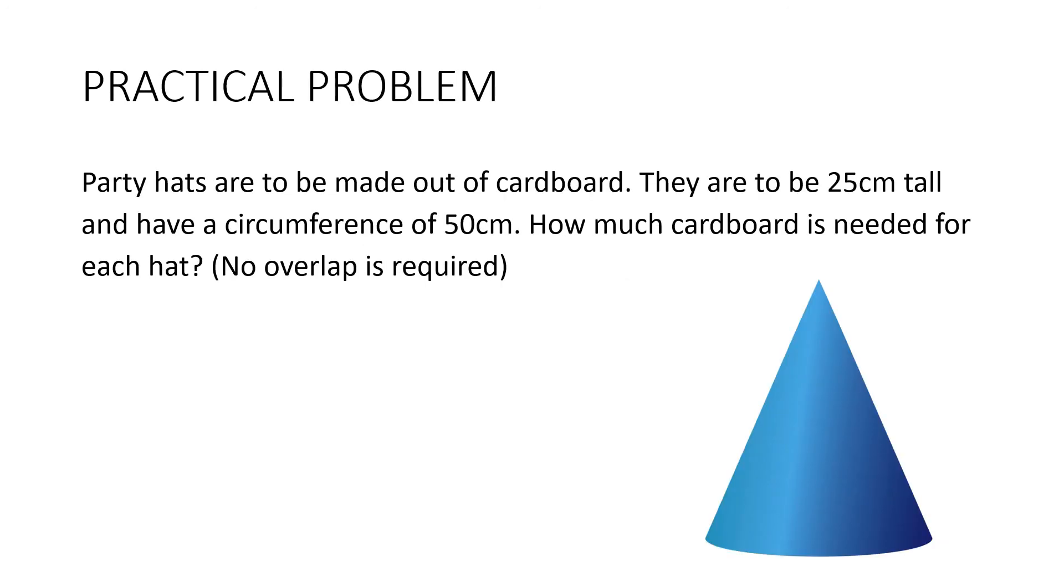Here's a practical problem. Party hats are to be made out of cardboard. They are to be 25 centimetres tall and have a circumference of 50 centimetres. How much cardboard is needed for each hat? It tells us that no overlap is required. So let's start by putting on the information that we have. We know the height is 25 centimetres. We don't know the slant height, and we don't know the radius. But we do know the circumference. So our first step is to work backwards from the circumference and work out what the radius is. 2πr is equal to 50. Divide both sides by 2π. The radius is 7.96 centimetres.